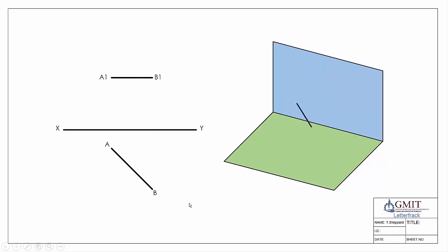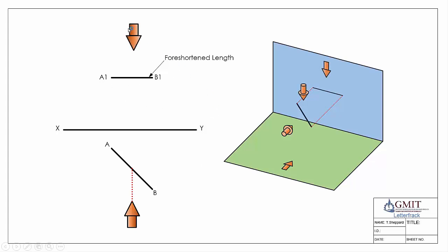In the reverse case — horizontal in elevation but angled in plan view — looking in from the front it is not perpendicular to us and not parallel with the XY line, so the front elevation is foreshortened. Looking from above, we are perpendicular to the line and the line is parallel with the XY line, so when projected it gives us a true length in plan view. In each of these cases at least one view gives us a true length line.